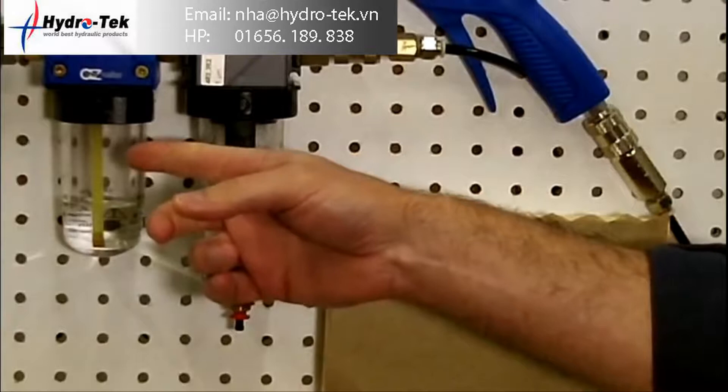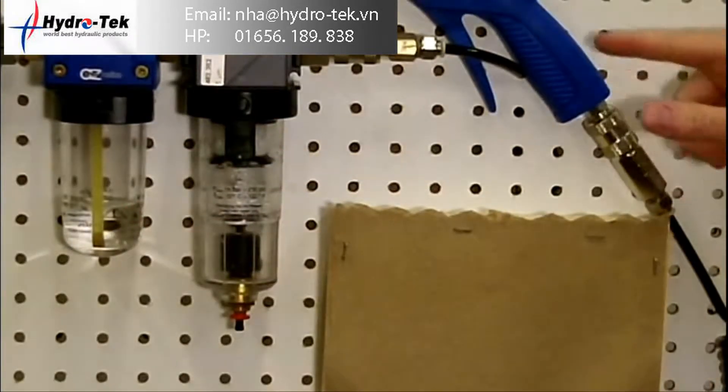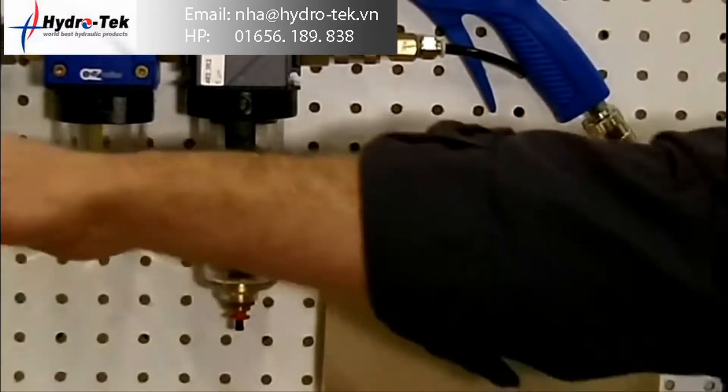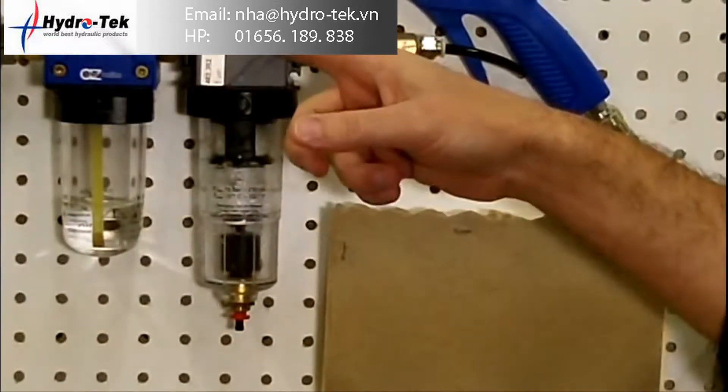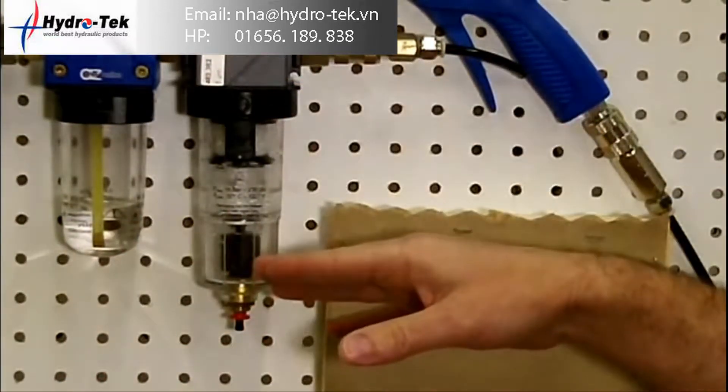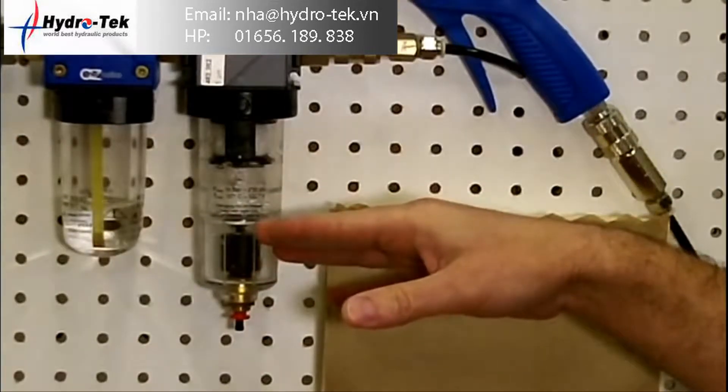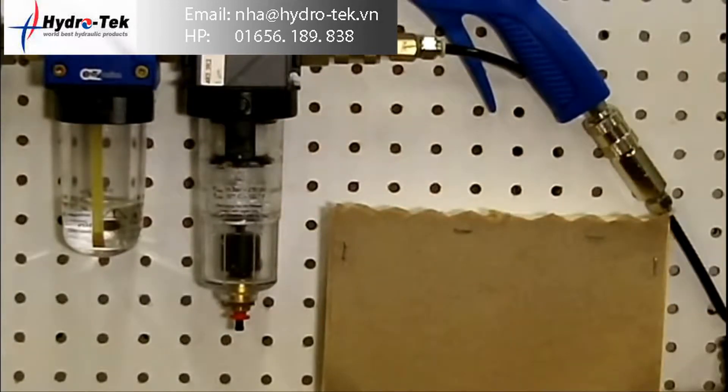We have here a lubricator that is filled with water coming through a quick disconnect to the EWO blow gun. What we are going to demonstrate is the incoming air will pick up the water via the lubricator and the water separator which has an auto drain in it will remove all of that moisture, all of that water from the airstream and you will see that it does not show up on this paper towel here.